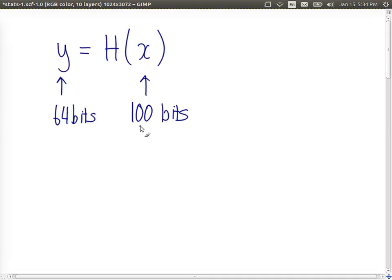But in this example, just for simplicity, I'll assume that the input is 100 bits, and the output is smaller than the input, at 64 bits. That's our hash value.